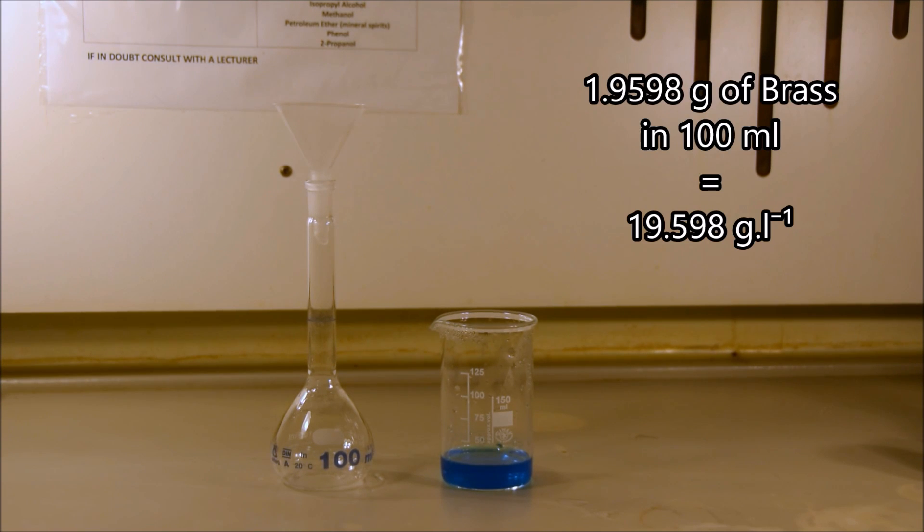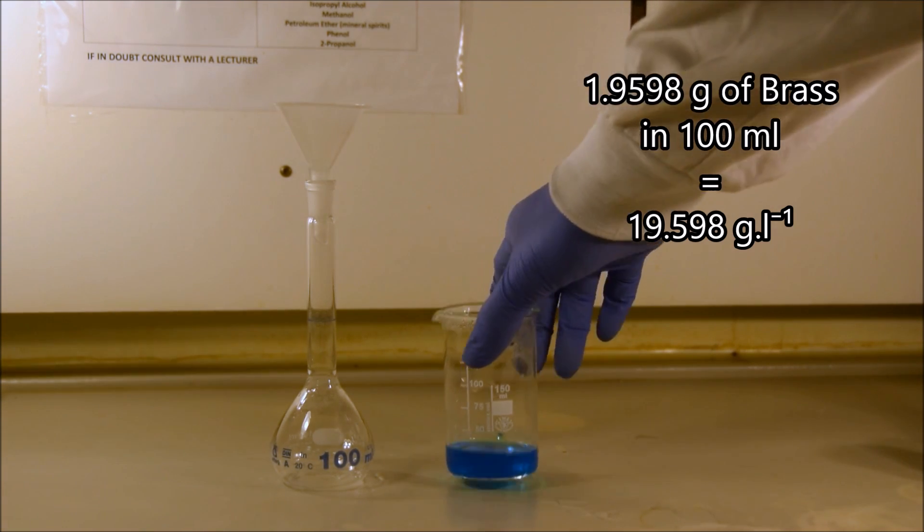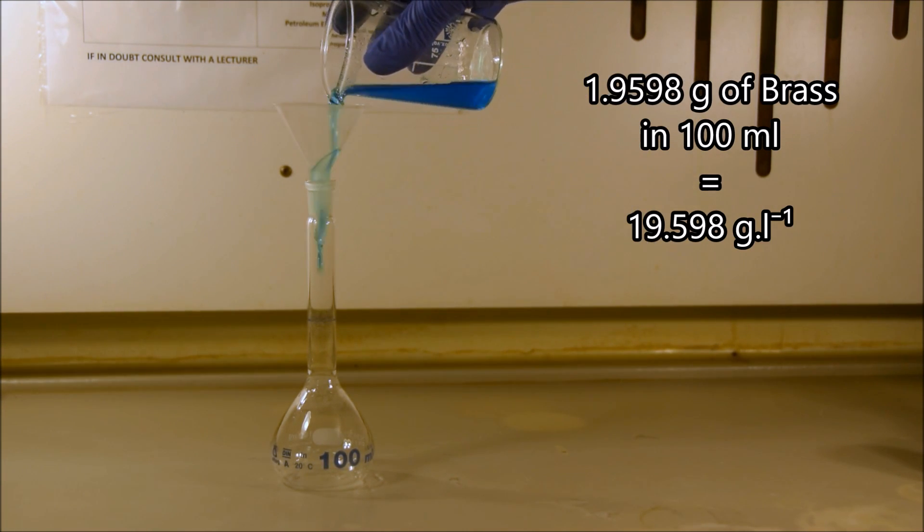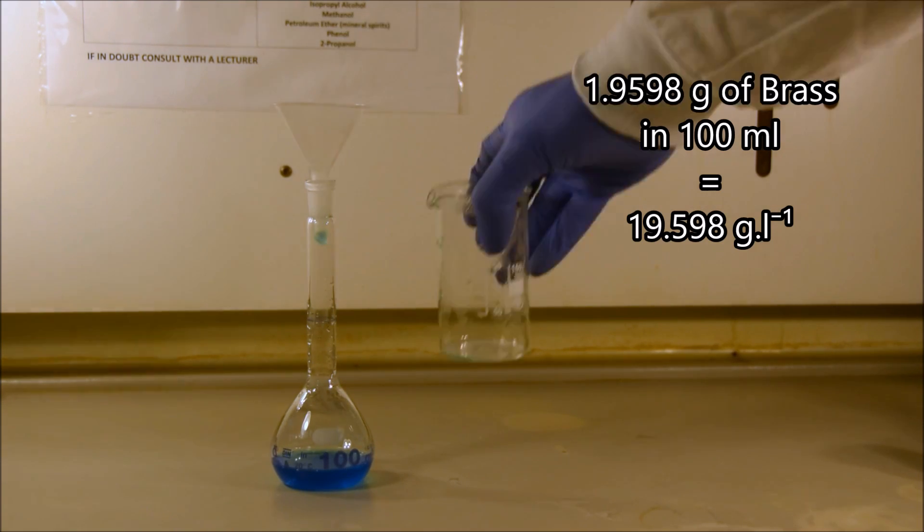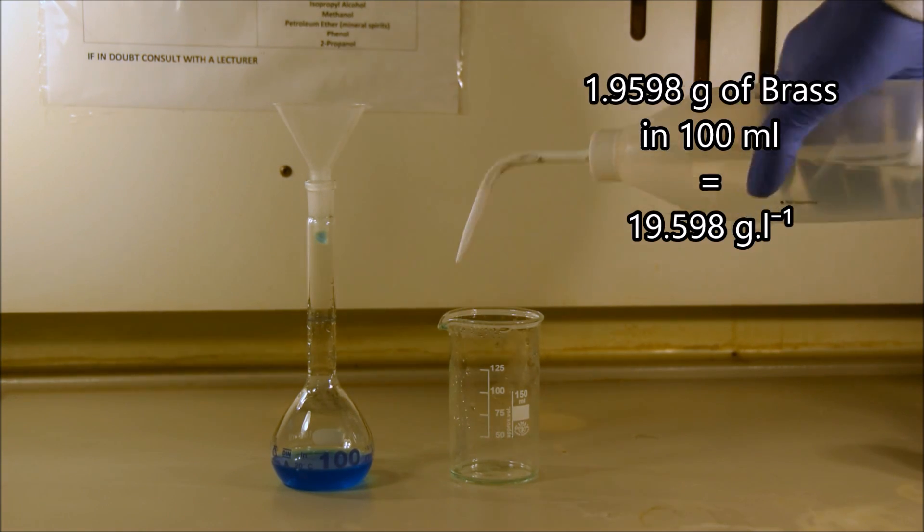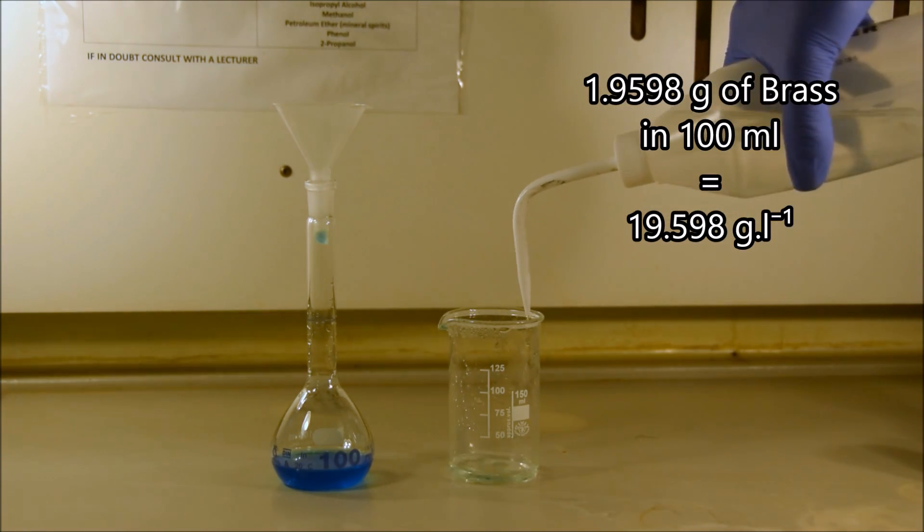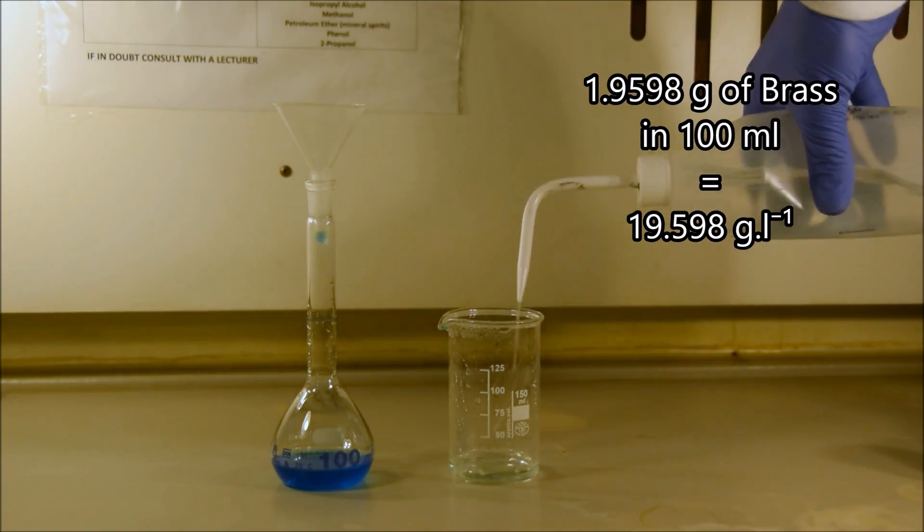So to do that we use a volumetric flask. In this case we're going to use a 100 milliliter volumetric flask, which means if we take our 1.9598 grams of brass and dissolve it in 100 milliliters of water, that's the equivalent of having 19.598 grams in 1 liter of water. We'll come back to why that's important later in this experiment.